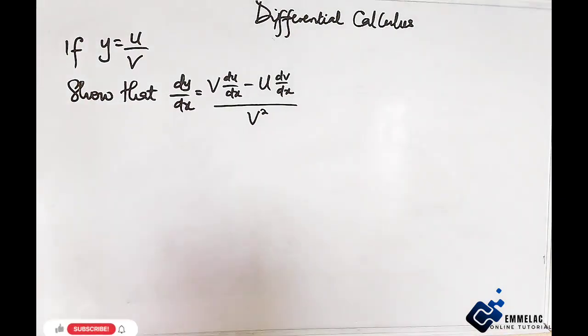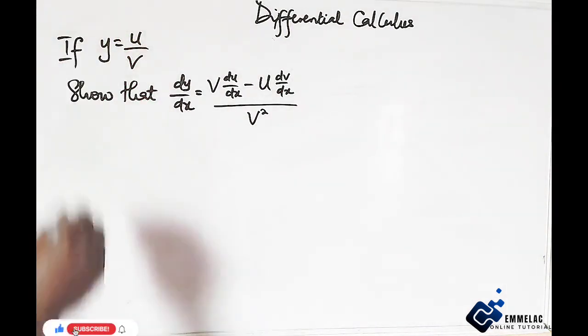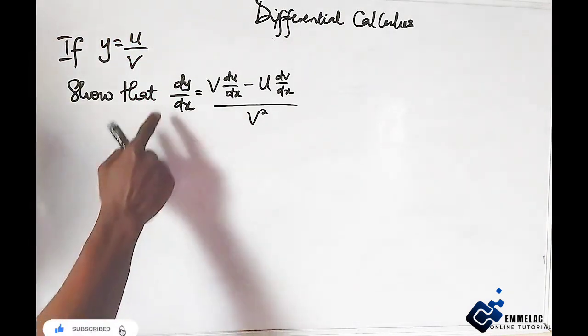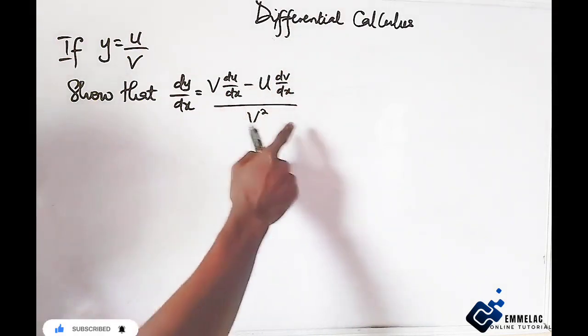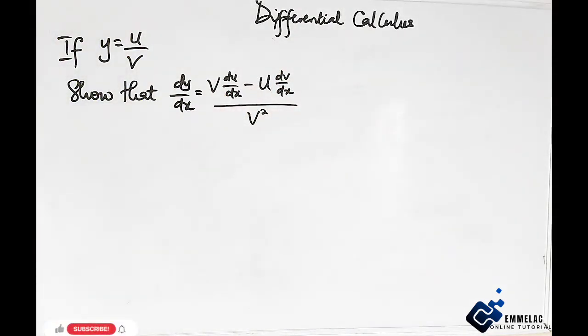Welcome to Emelac online tutorial. We're looking at to show that dy/ds equals v·du/ds minus u·dv/ds all over v squared.